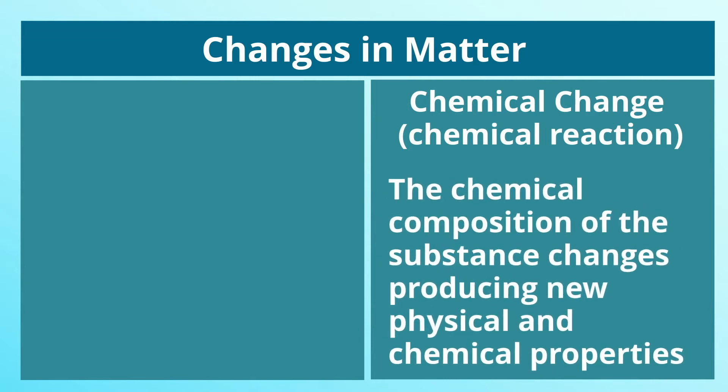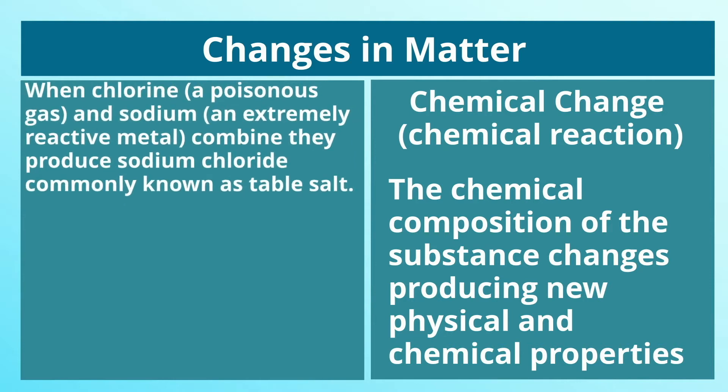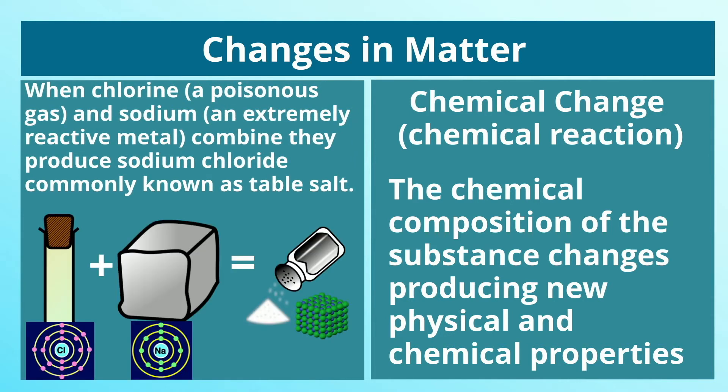Chemical Change or Chemical Reaction. The chemical composition of the substance changes, producing new physical and chemical properties. When chlorine, a poisonous gas, and sodium, an extremely reactive metal, combine, they produce sodium chloride, commonly known as table salt.